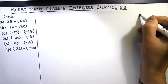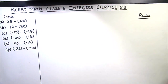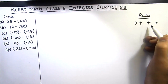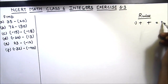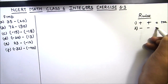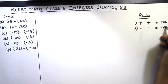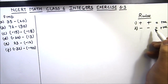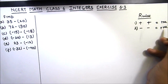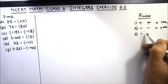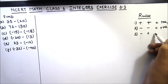Before we start, we should revise our rules for integer addition and subtraction. There are four basic rules. The first one is: positive and positive makes positive. The second one is: negative and negative also makes positive. That means if the two signs are the same, the result is positive, or addition.